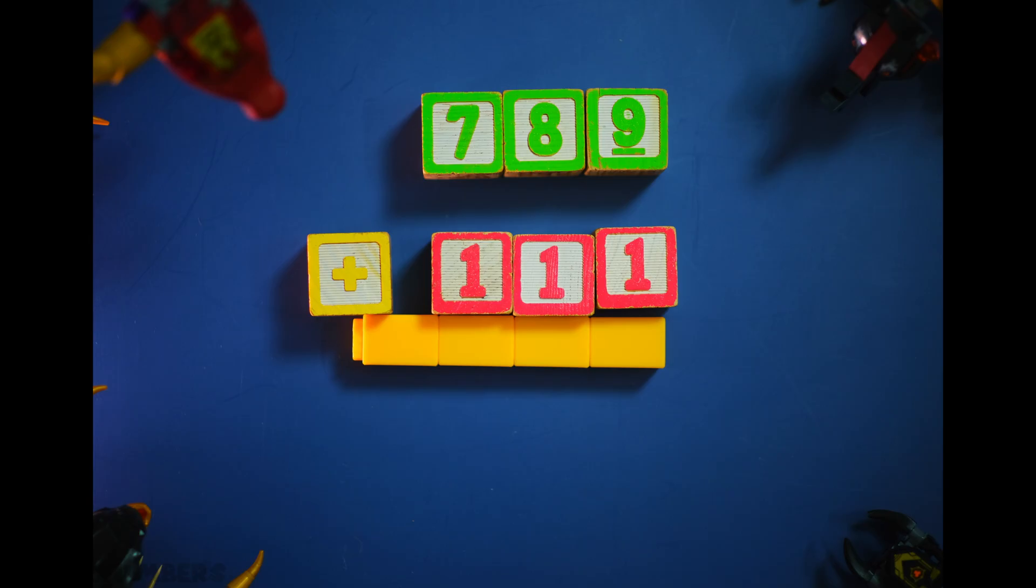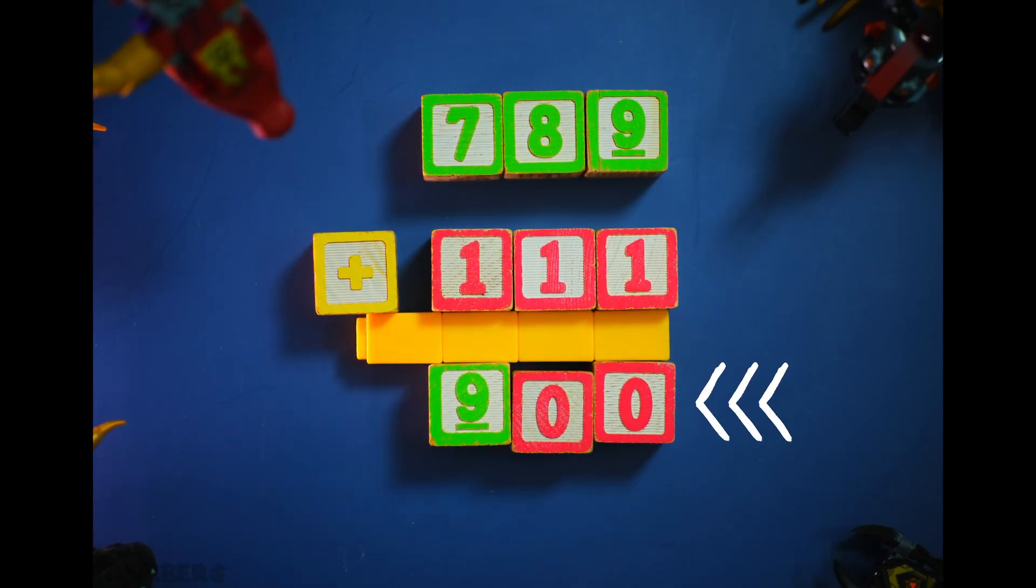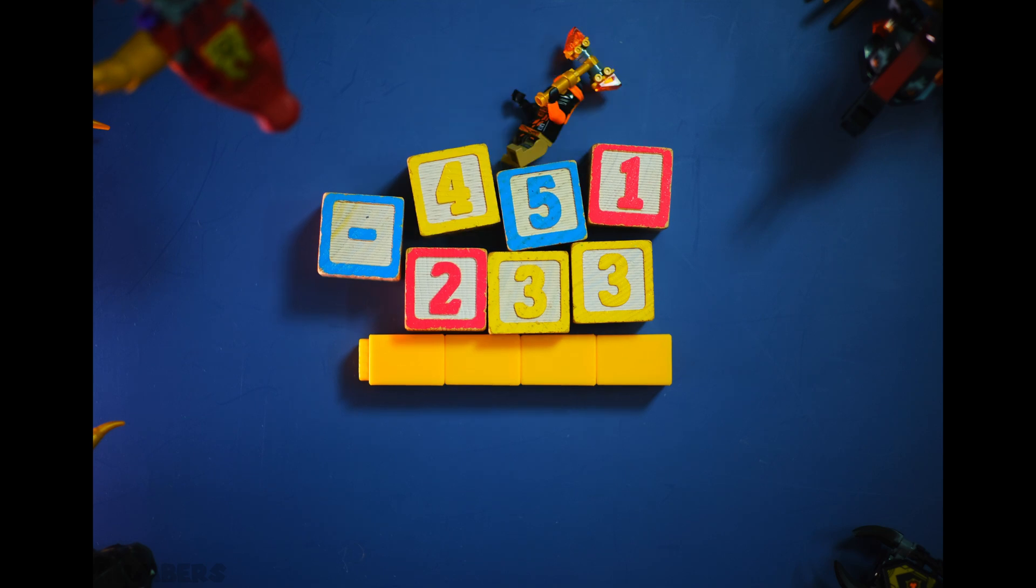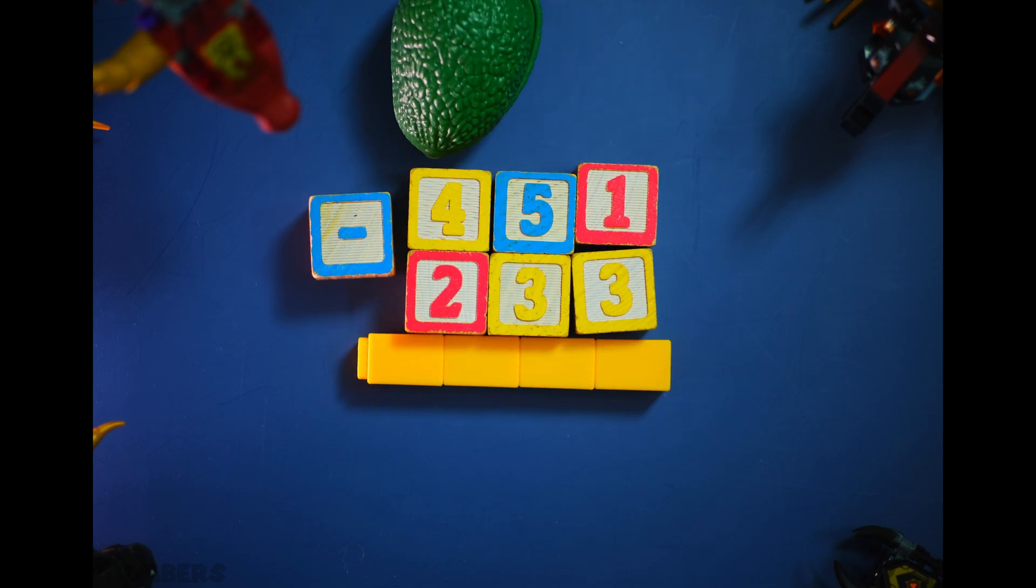So this is actually 100 plus 800 or 900. What's 451 donuts minus 233 donuts? Well, I don't have that many donuts, but I have blocks.